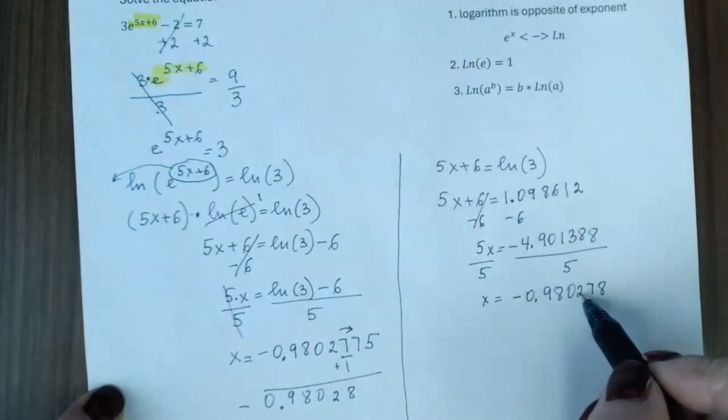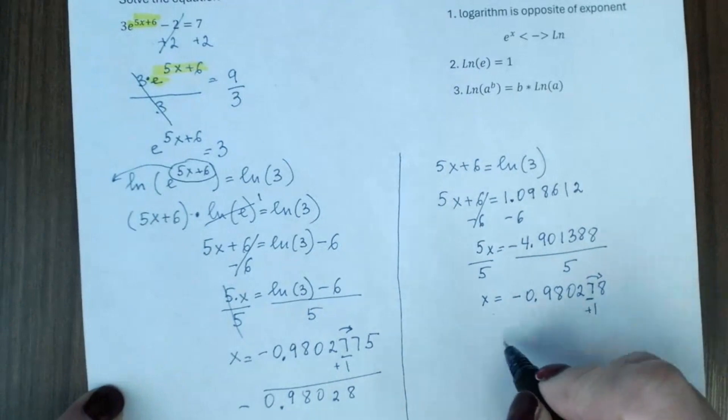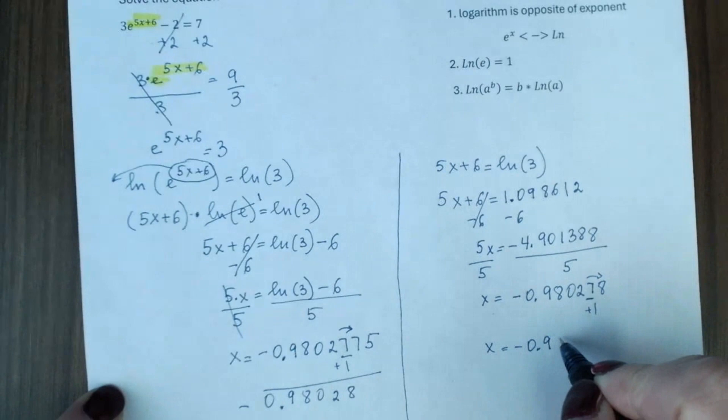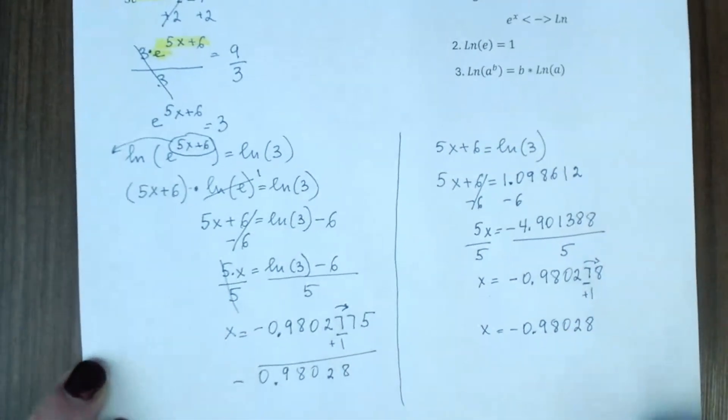1, 2, 3, 4, 5. You look over here. You will add the 1. And the final answer is negative 0.98028.